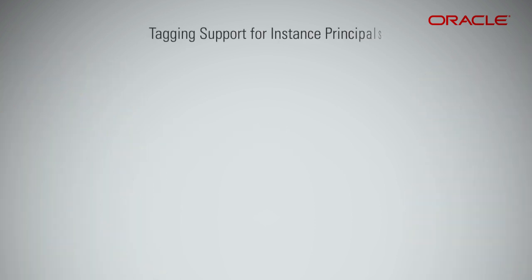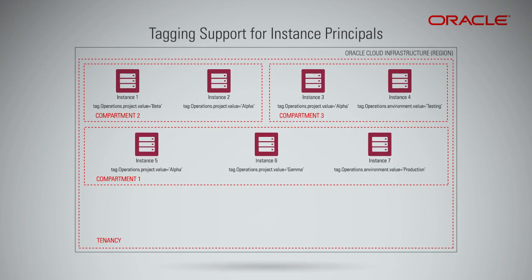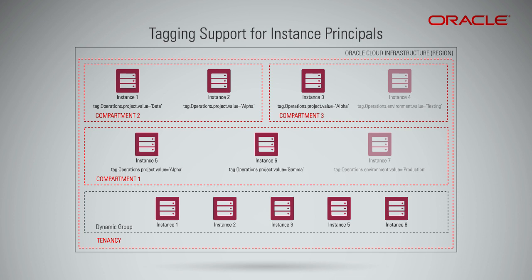For better understanding, let us consider this scenario. Here you have tagged compute instances in different compartments across a tenancy. Say you want to group all instances tagged with the tag namespace called 'operations' and tag key called 'project'. For that, you must enter the API parameter matching rule Tag.operations.project.value. All instances that currently exist or get created with the tag namespace 'operations' and tag key 'project' are members of this group.